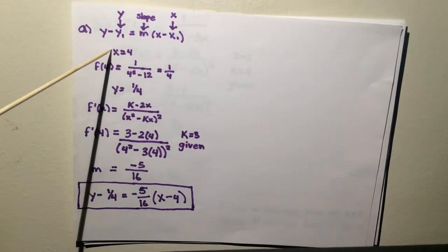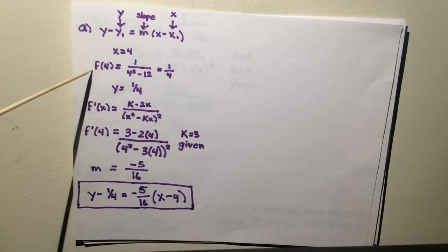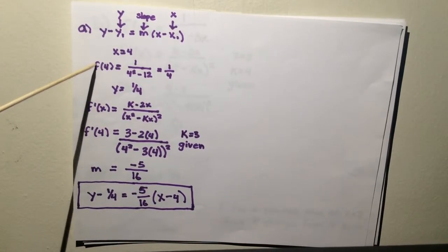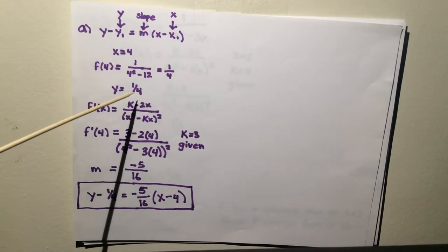Your x is already given to you, so x equals 4. You need to find your y, so you just plug in 4 into the f function. Once you solve, you get 1 fourth. So y equals 1 fourth.